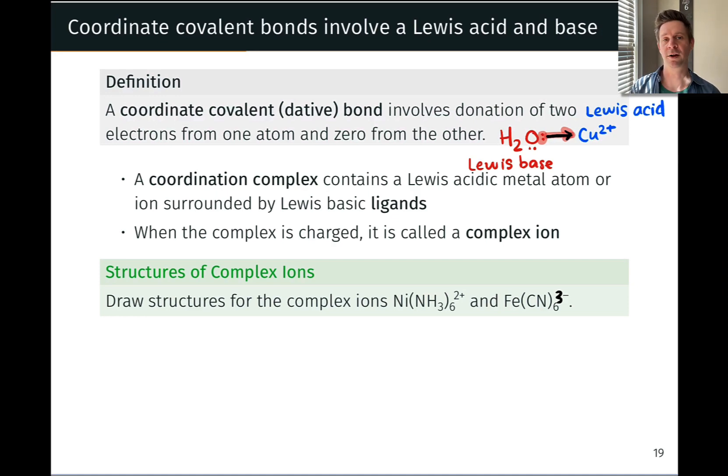Now, multiple coordinate covalent bonds are very common. For example, when you take copper 2 sulfate and dissolve it in water, the copper 2+ forms something like six dative bonds with waters as waters surround that Lewis acid.